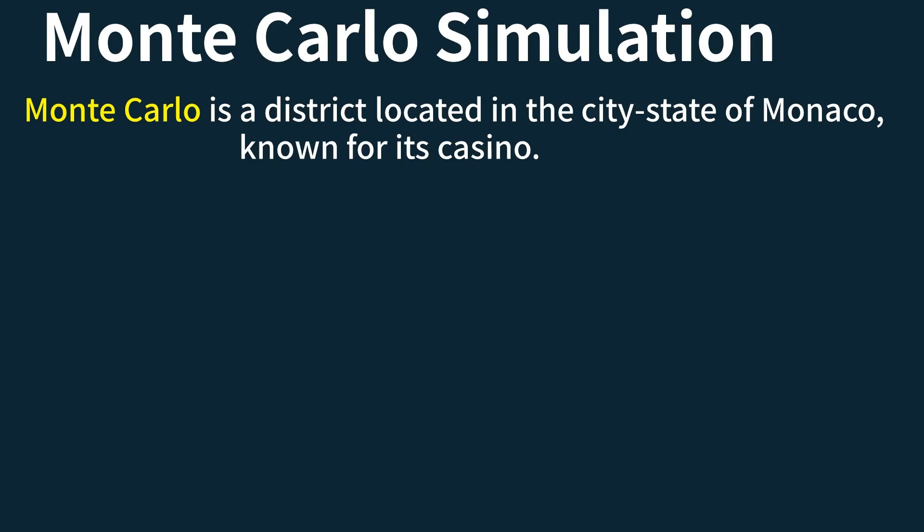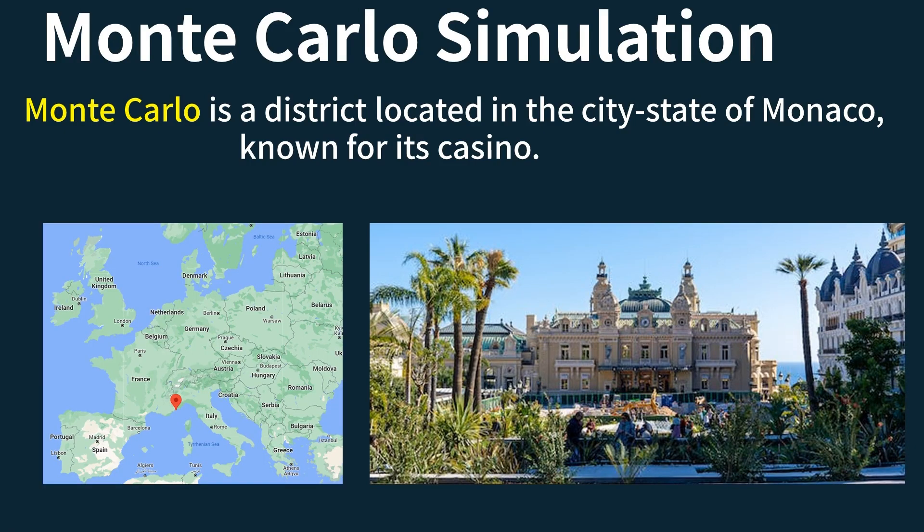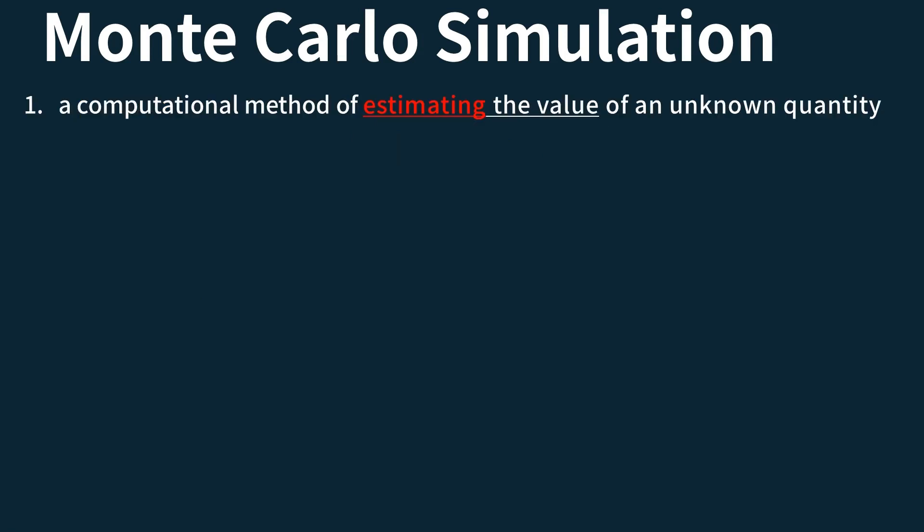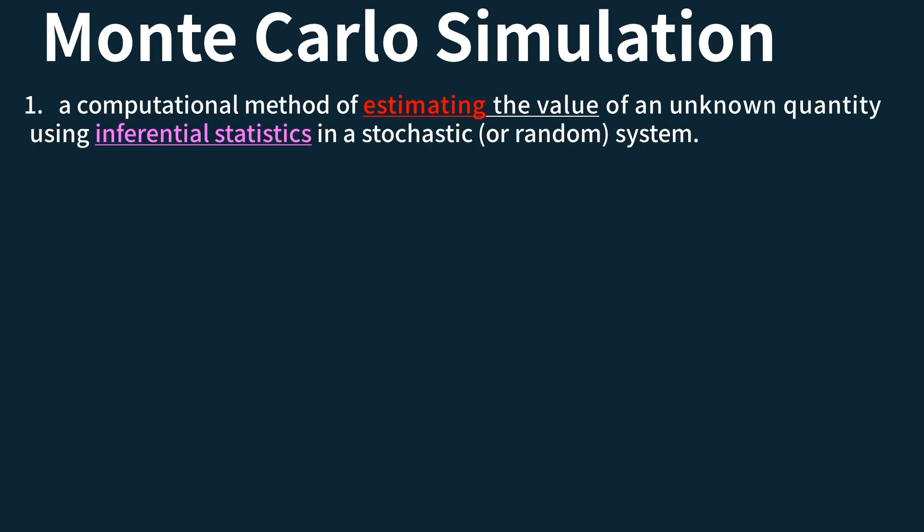Monte Carlo is a district located in the city-state of Monaco, known for its casino. The Monte Carlo simulation is named after this district, as it relies on the use of random numbers using gambling devices such as wheels and dice. The Monte Carlo simulation is a computational method of estimating the value of an unknown quantity using the principles of inferential statistics in a stochastic or random system.